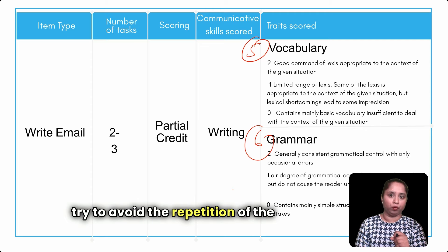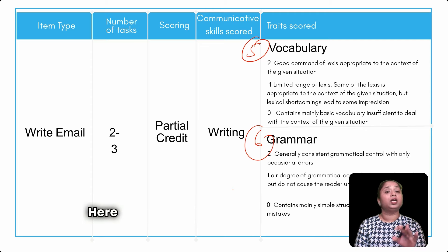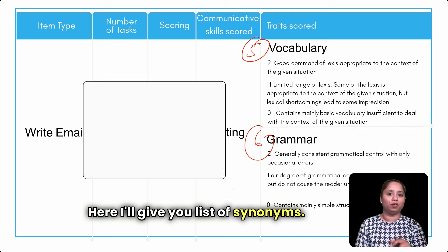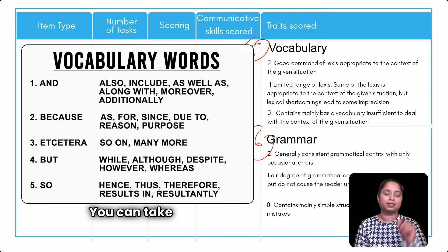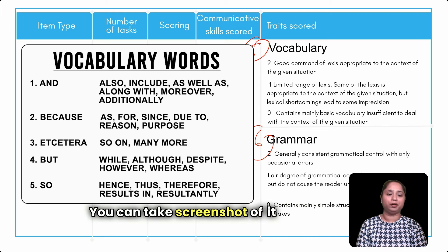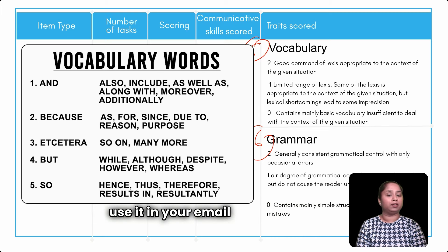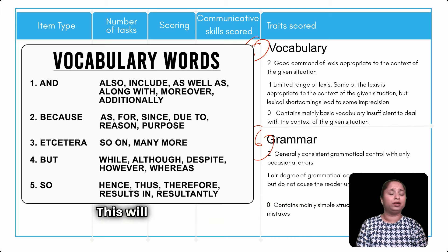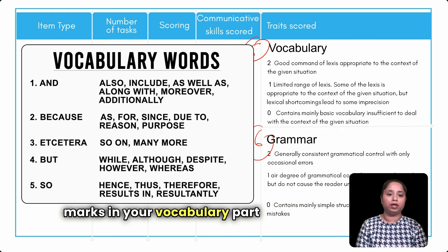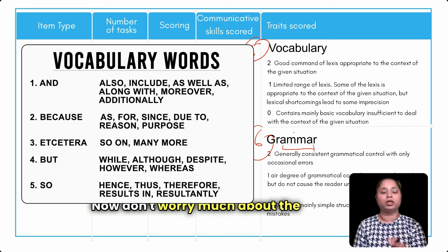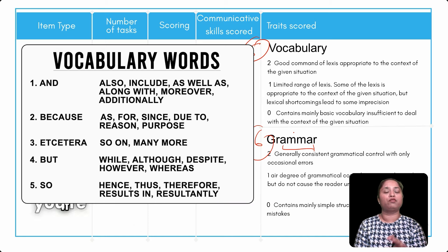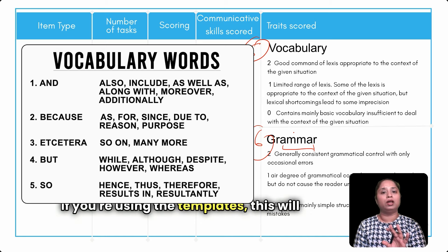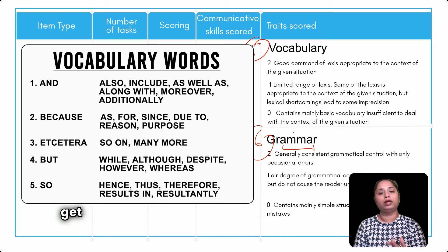For vocabulary, try to avoid repetition of words. A list of synonyms will be provided — take a screenshot and use them in your email writing; this will definitely give you two marks in vocabulary. For grammar, don't worry too much — if you use the templates, they will help you get the full score in grammar as well.